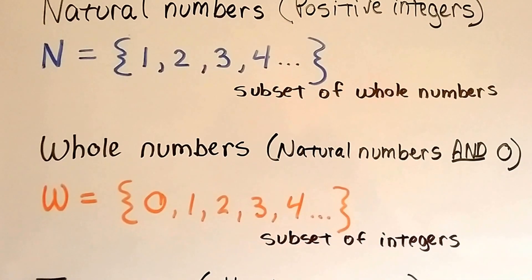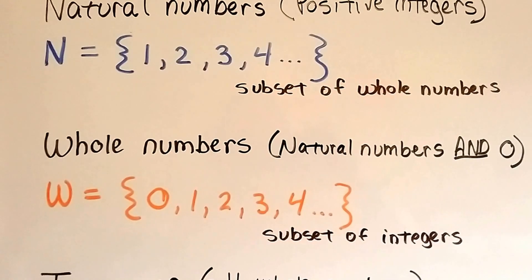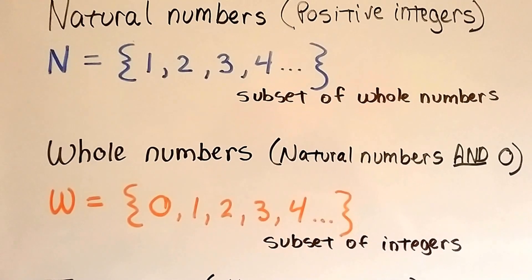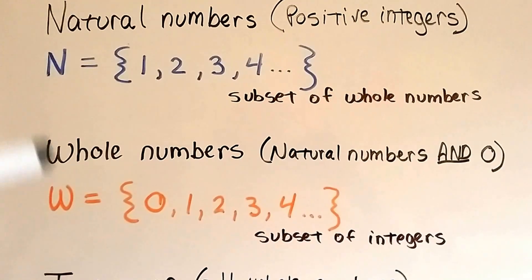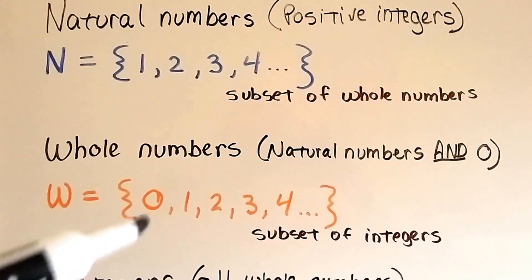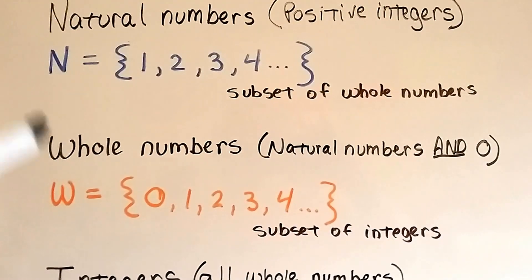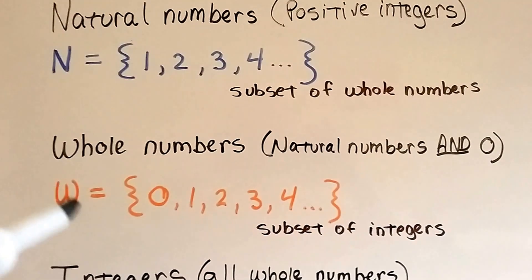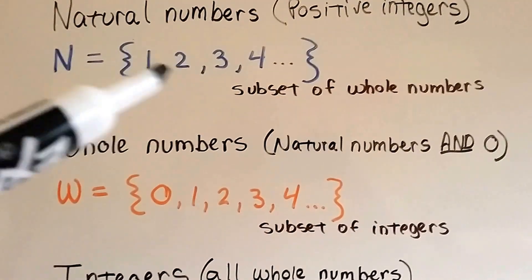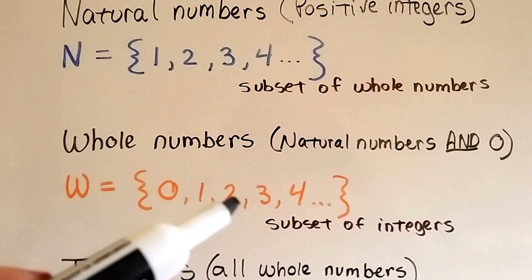Whole numbers are natural numbers and zero. Whole numbers would be 0, 1, 2, 3, 4 — so it would be all the natural numbers, and we're adding a zero. The natural numbers are a subset of the whole numbers, because all of them are inside of this set.